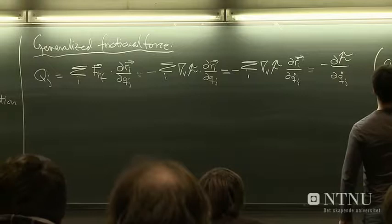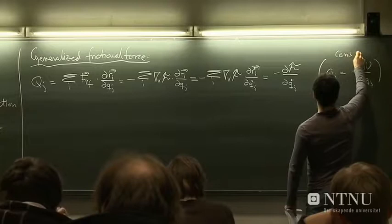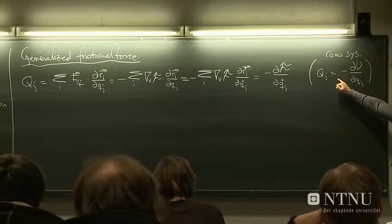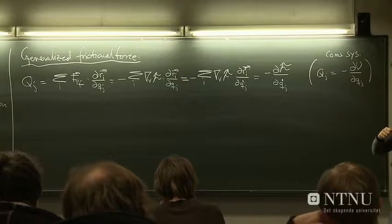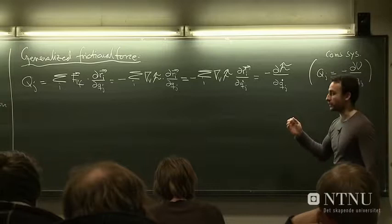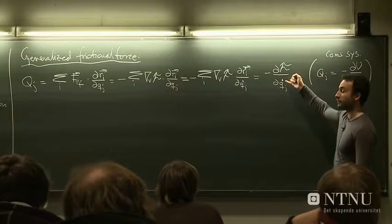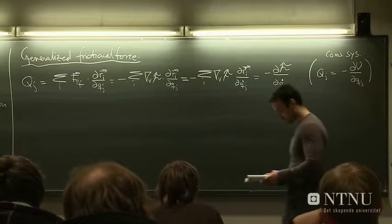And just to show you that this is similar, actually, to a conservative system, keep in mind that in that case we have this expression for the generalized force. It's just a gradient of, or the derivative of some potential U, or V, or whatever you want to call it, with respect to the generalized coordinate q, small qj. So it's the same thing, in principle. You have the generating function here, curly F, and then you have with respect to velocity instead of position.